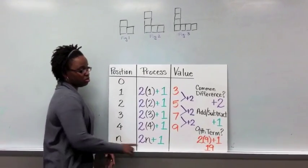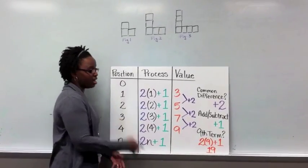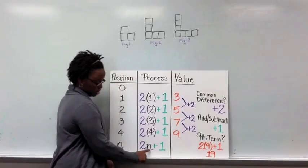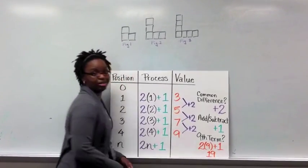And so then, when you look to do the 9th term, we don't necessarily need to draw out the L, but we can plug in a 9 as our position where that variable is. 2 times 9 is 18, plus 1 is 19.